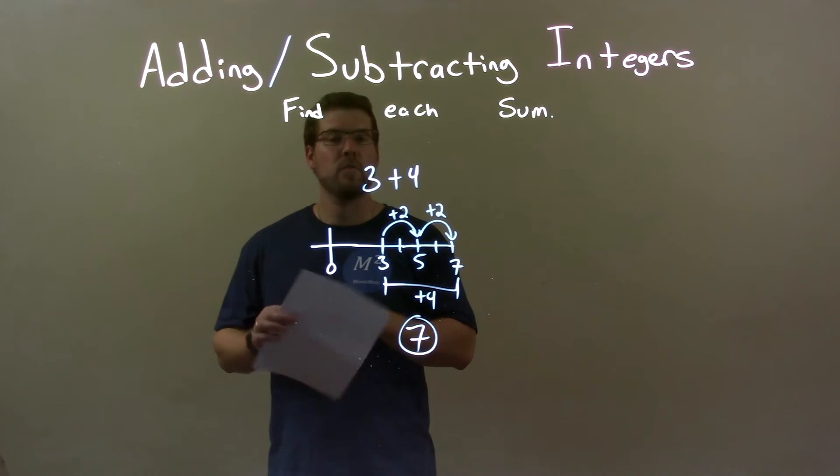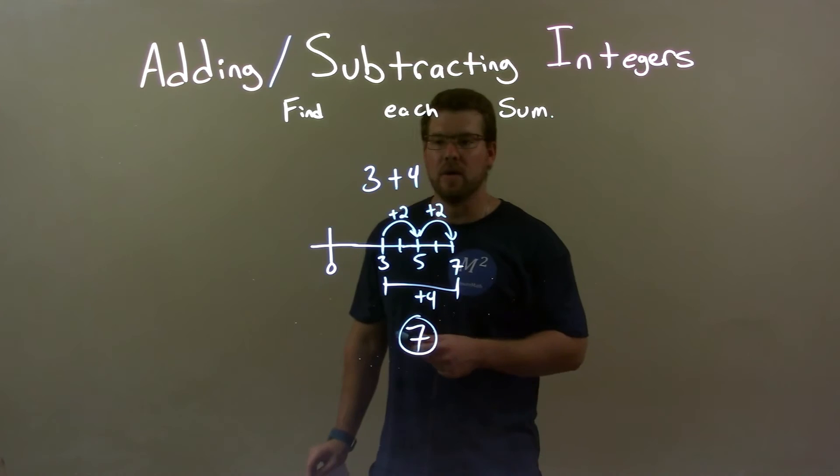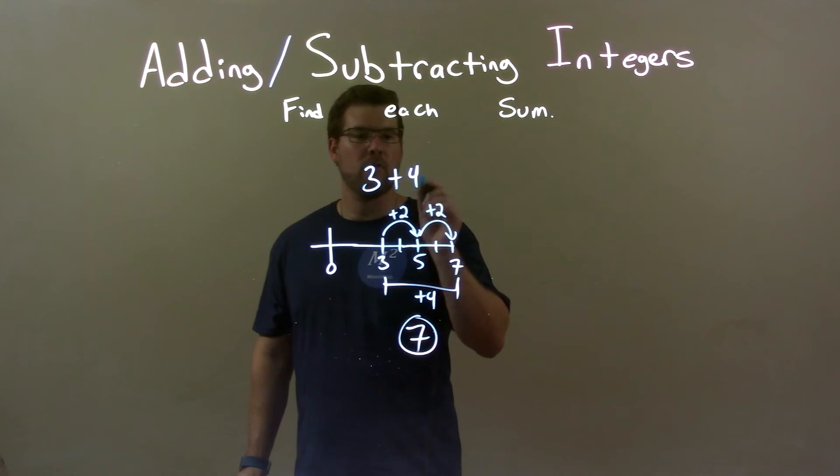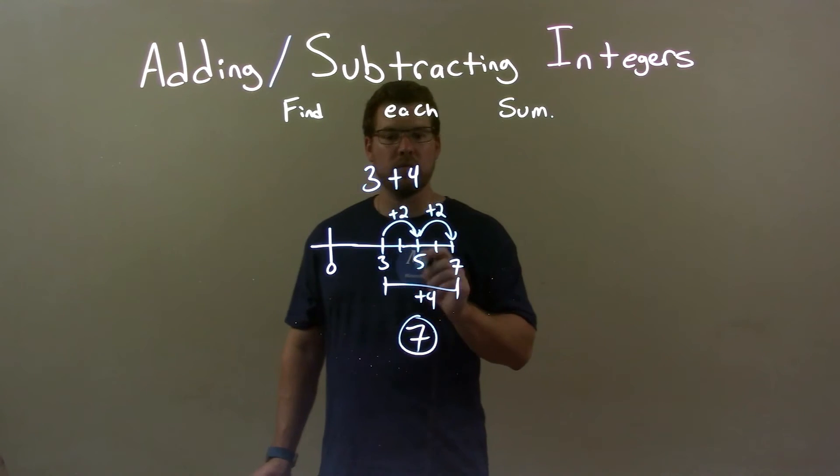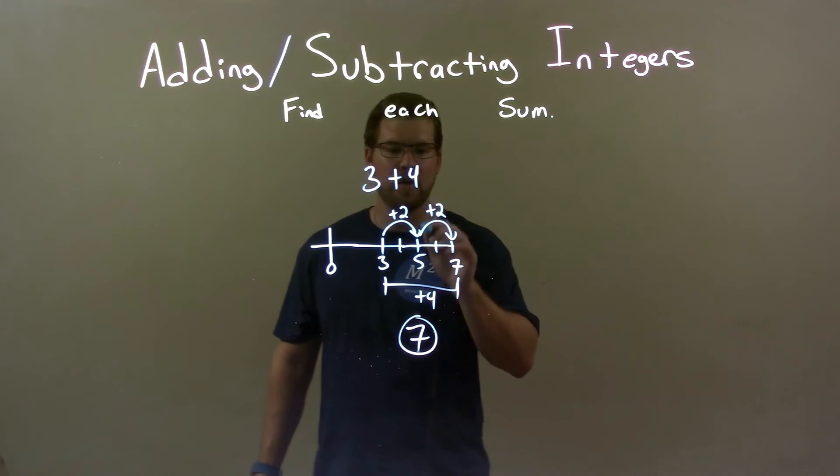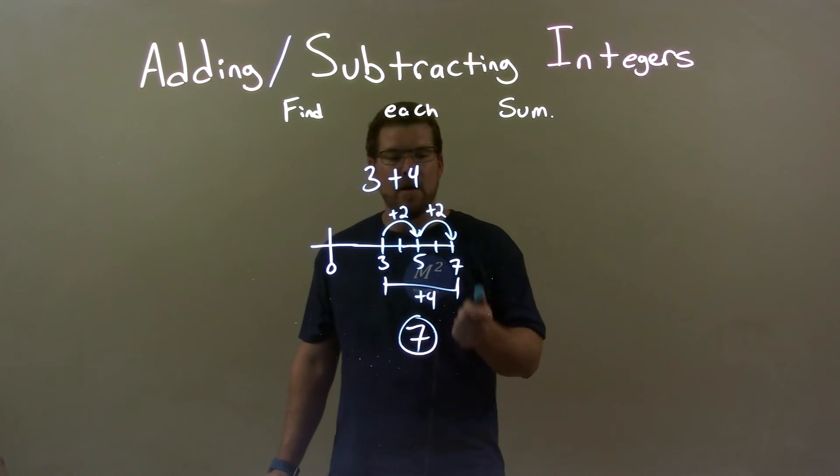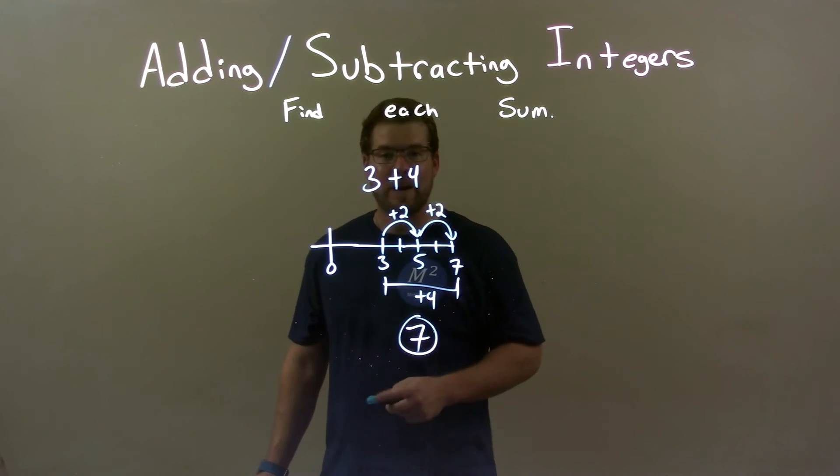So quick recap, we're given 3 plus 4, and we've got to find that sum. Well, we start with 3, and I broke 4 down to be 2 plus 2. Well, 3 plus 2 is 5, so I'm going to do 5, that's easy for me to see, and then add another 2, got me to 7, and so 7 here is just our final answer.